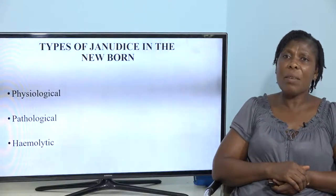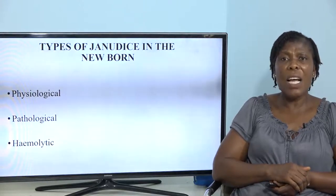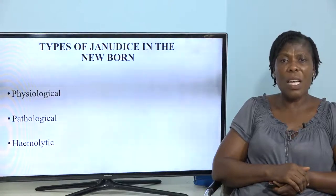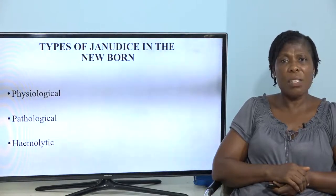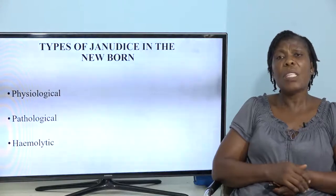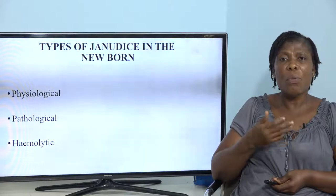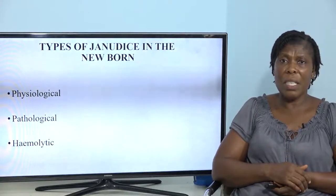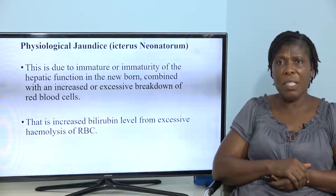Let's look at the types of jaundice in the newborn. We have physiological jaundice, pathological jaundice, and hemolytic jaundice. We will take each and every one of them and go into detail to see how each one occurs. We will start with physiological jaundice.